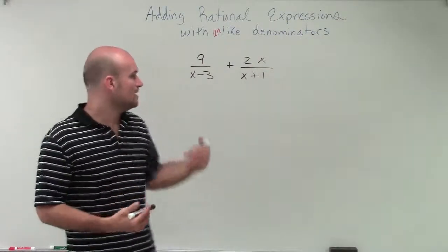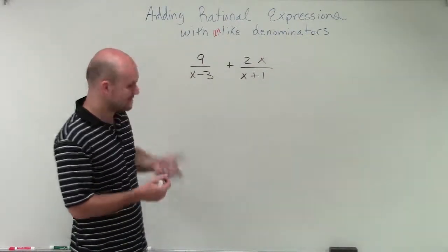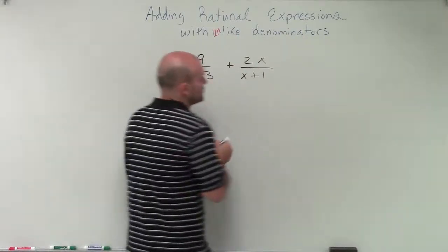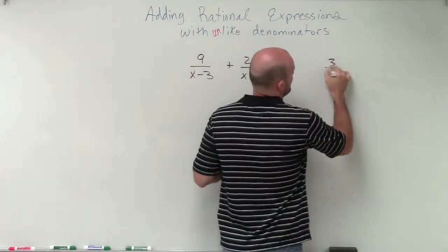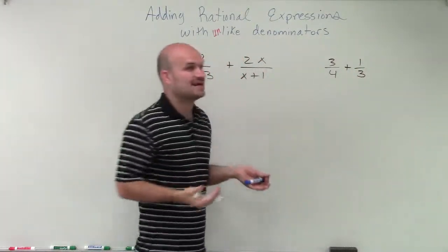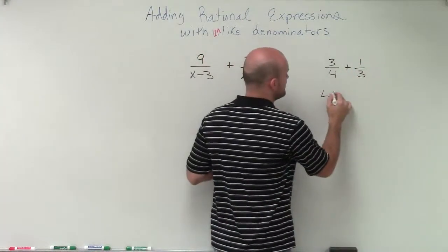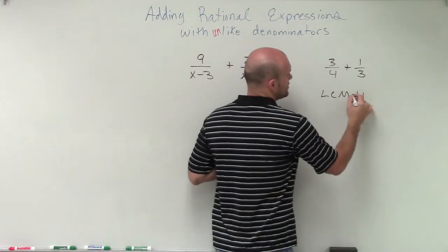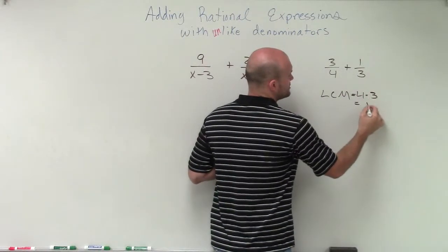Now, when you have something like this, one way that we can determine this is just say, well, let me go over an example. Let's say if I had 3 over 4 plus 1 over 3. Now, a lot of times when we find our LCM, we determine the LCM was 4 times 3, which is equal to 12.